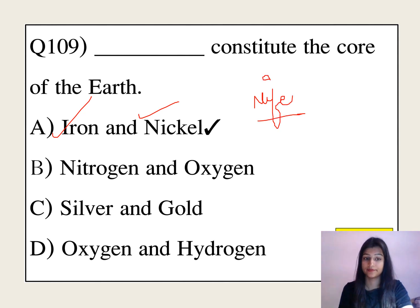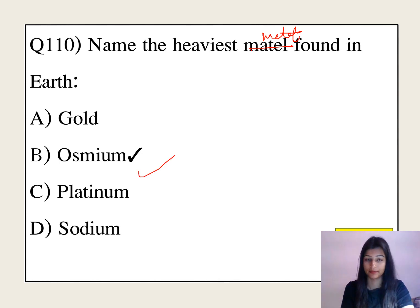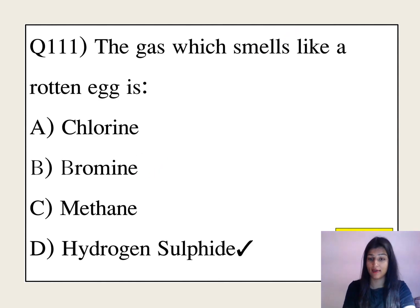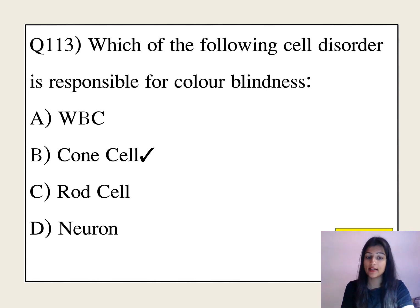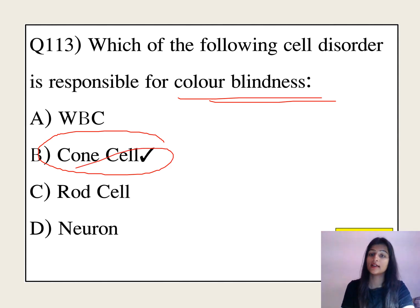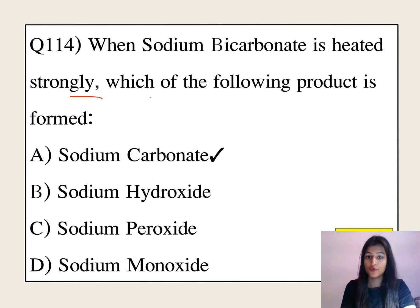Iron and nickel constitute the core of the earth. Which is the heaviest metal found on earth? The answer is osmium. The gas that smells like rotten egg is hydrogen sulfide. Silver is the best conductor of electricity. When sodium bicarbonate is heated strongly, sodium carbonate is formed.